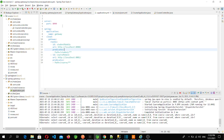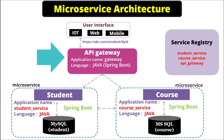That's all for this video. We have successfully created our API Gateway and were able to access the course microservice APIs through it. In the next video we are going to create a service registry where we will register all our services and the gateway, and then the gateway will access the APIs through the service registry. If you like this video please like and share it and subscribe to the channel.